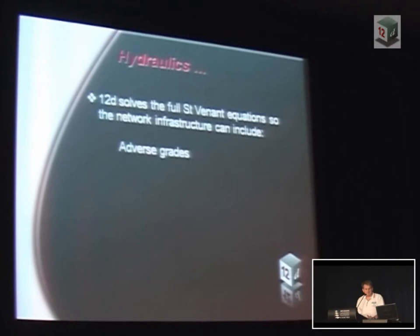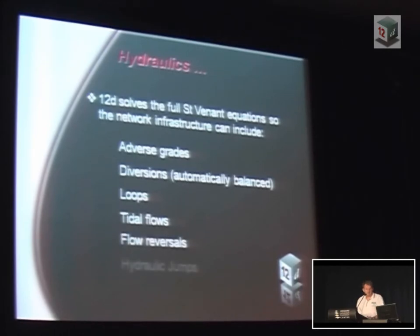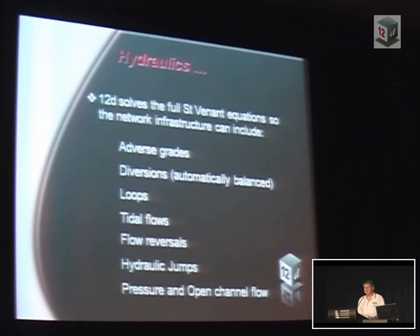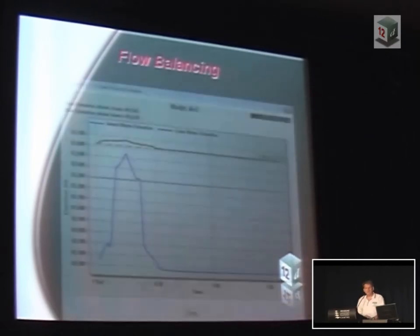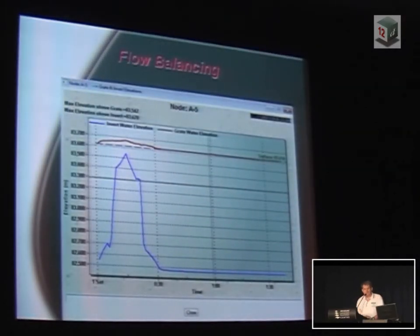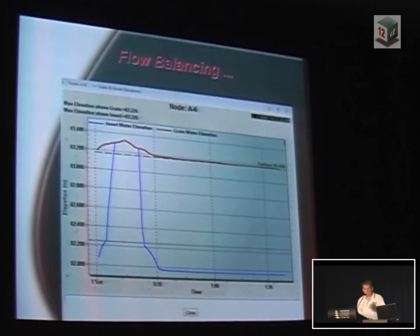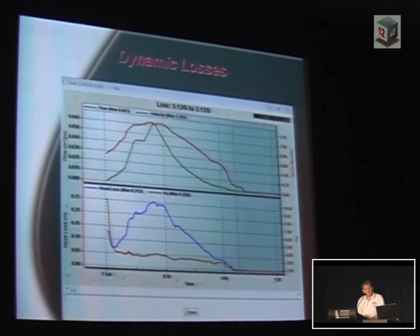By solving the full Saint-Venant equations we can account for adverse grades, diversions — we can have any number of diversions in the model — loops, tidal flows, reverse flows, hydraulic jumps, supercritical and subcritical flow, and we go from pressure to open channel flow all in the one model. We do flow balancing: the red line is the hydraulic grade line from the surface conduit; the blue is the hydraulic grade line controlling the pipe flow underneath. They're separate hydraulic grade lines that eventually coincide when the manhole surcharges, then separate again. The losses are calculated dynamically — the orange line shows the KU varying from about 10 down to 2. A model with 100 nodes might do a billion calculations of KU in the simulation in a few minutes.